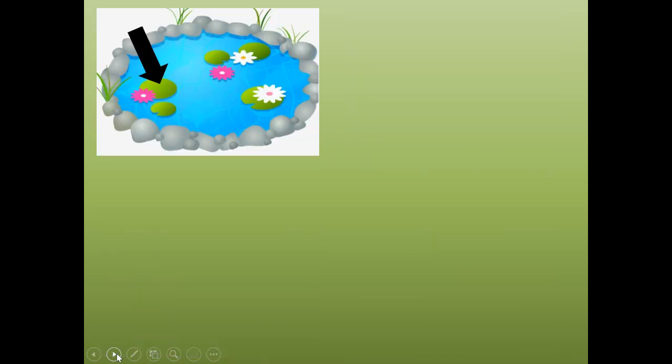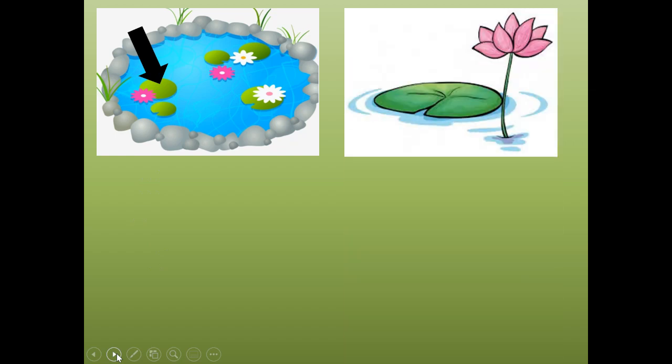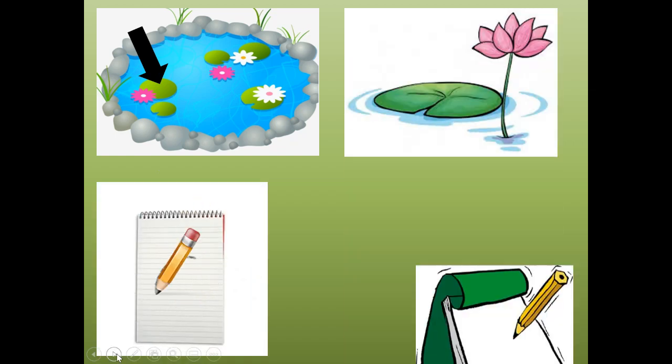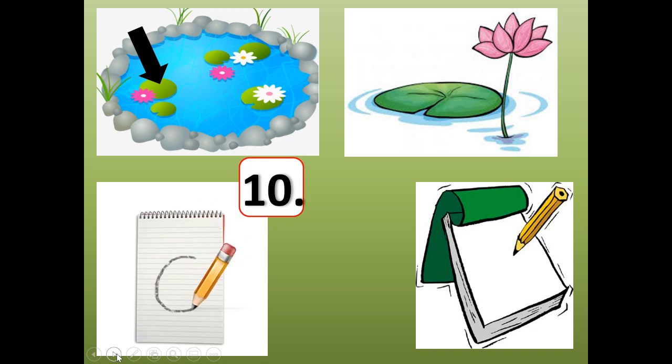Number ten. Rhymes with dad. These are all examples of what? Number ten. Pad. Stretch it. Pad. Shrink it. Pad. Pad and dad rhyme. P-A-D. A lily pad or a writing pad. A lily pad isn't a pond, and a writing pad is paper that you write on. Pad.